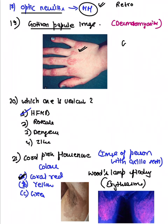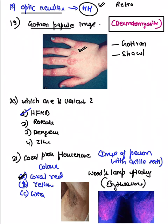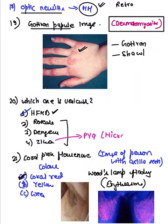Dermatomyositis is a favourite exam topic — they showed Gottron papilla with a salt-and-pepper sign. They then asked which rash is vesicular among roseola, dengue, and Zika virus. Only hand-foot-mouth disease gives a vesicular rash. Important PYQ: Zika virus can cause microcephaly.